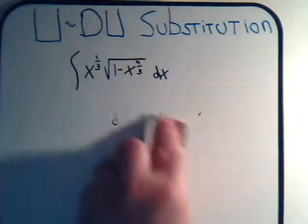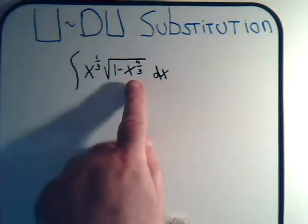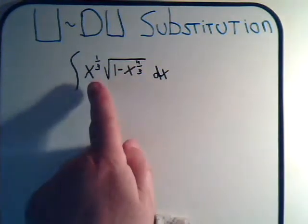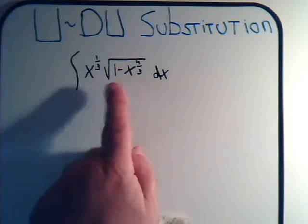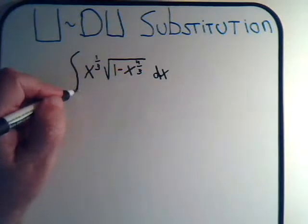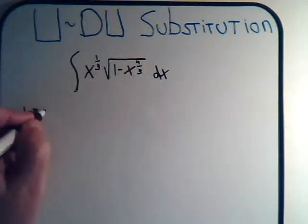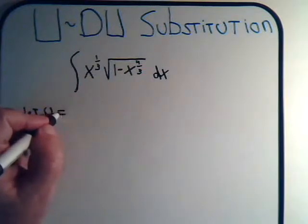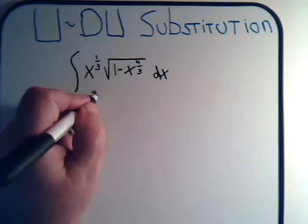And when we look at the problem, the other clue is that you should call this du because x is raised to a higher power than what this is. And of course, when we take du, when we differentiate, this is going to get knocked down by a power of 1. So we would attempt to solve this by saying, let u equal 1 minus x to the 4/3.